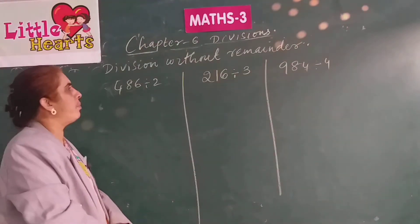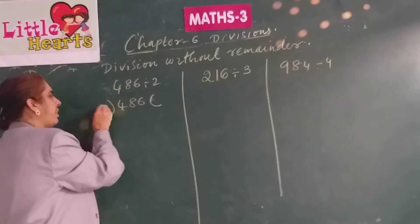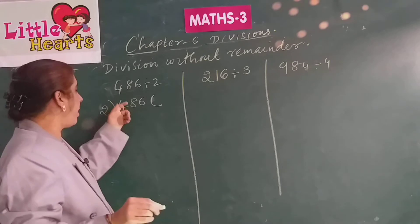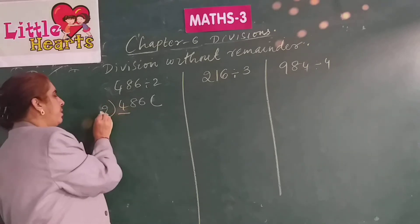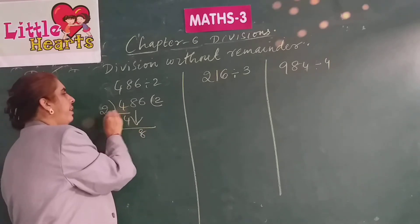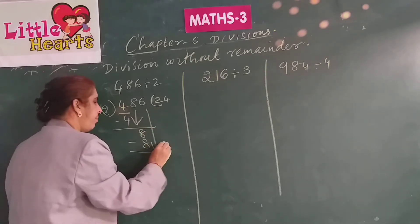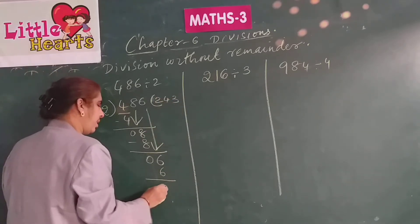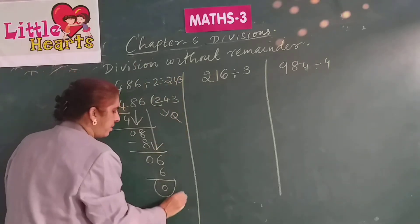Division of a 3-digit number by a 1-digit number without remainder. Take 486 divided by 2. Arrange and start dividing from the hundreds place. As 4 is greater than 2, take only 1 digit: 4. Read 2 table: 2 twos are 4. Bring down 8; 2 fours are 8; 8 minus 8 is 0. Bring down 6; 2 threes are 6. The quotient is 243 with remainder 0.